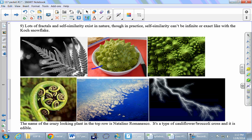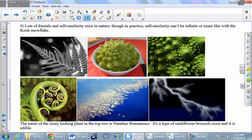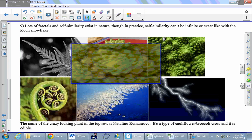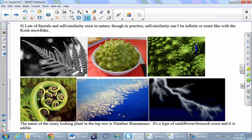This thing right here is a cauliflower broccoli cross. It is a vegetable, it is edible. It's called the Natalino Romanesco. If you just zoom in on one part of it, like over here, you can see that it kind of just keeps looking like that as you zoom in more and more.